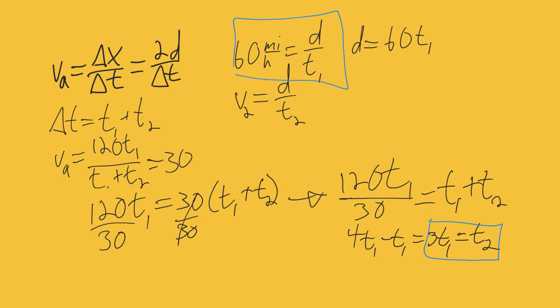So let's substitute in 3 t1 into my t2 up here. So this means that distance is over 3 t1. Now remember, I circled the 60 miles per hour is d over t1. Notice I have d over t1. So I'm going to substitute in 60 for that. So it's going to be 60 over 3. And that leaves me with 20 miles per hour.